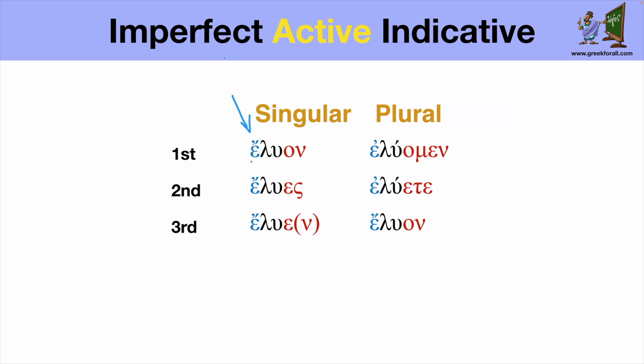You can notice that the first person singular and the third person plural have identical forms. If the word is written by itself stands on its own, you can translate it either I was losing or they were losing. But in the sentence or in the larger context, you will have no problems to distinguish which of this form is actually used.